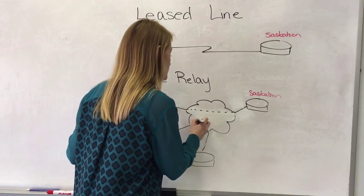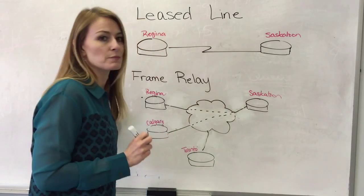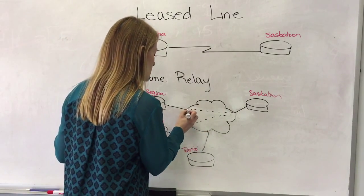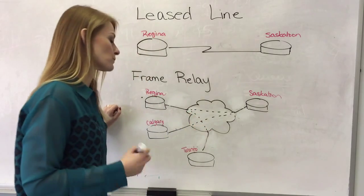Maybe Calgary and Saskatoon also need to communicate often. So maybe you've got a PVC assigned there. And now let's make one from Regina to Toronto. There we go.